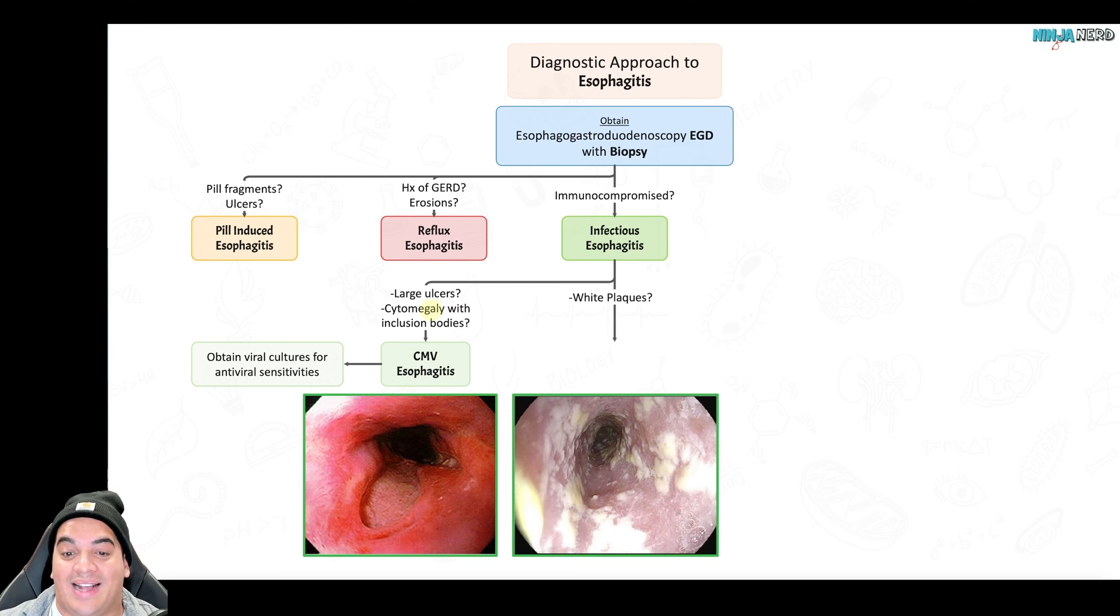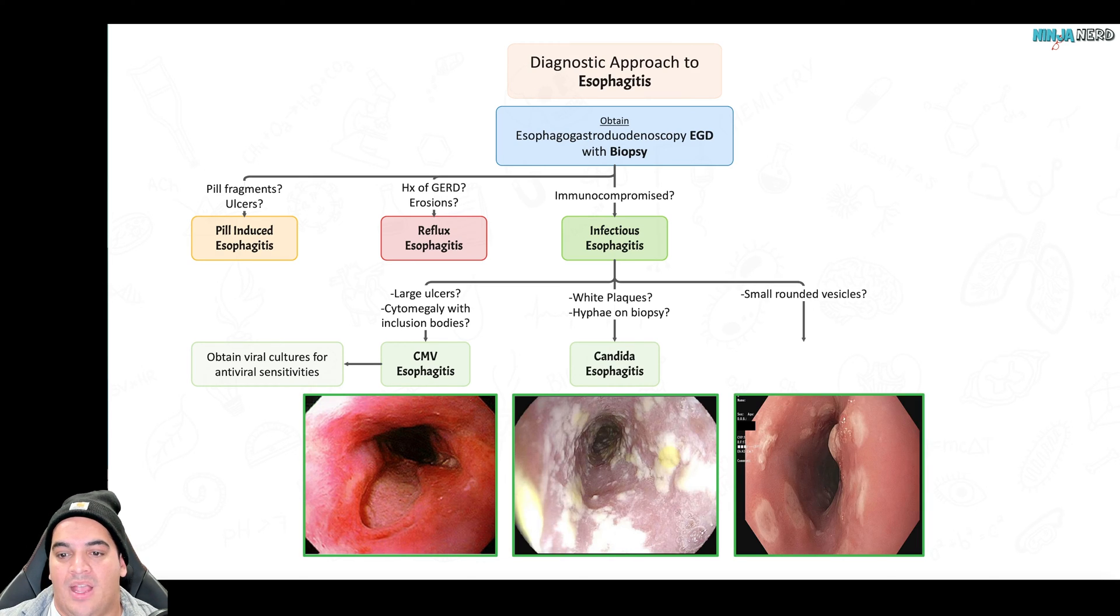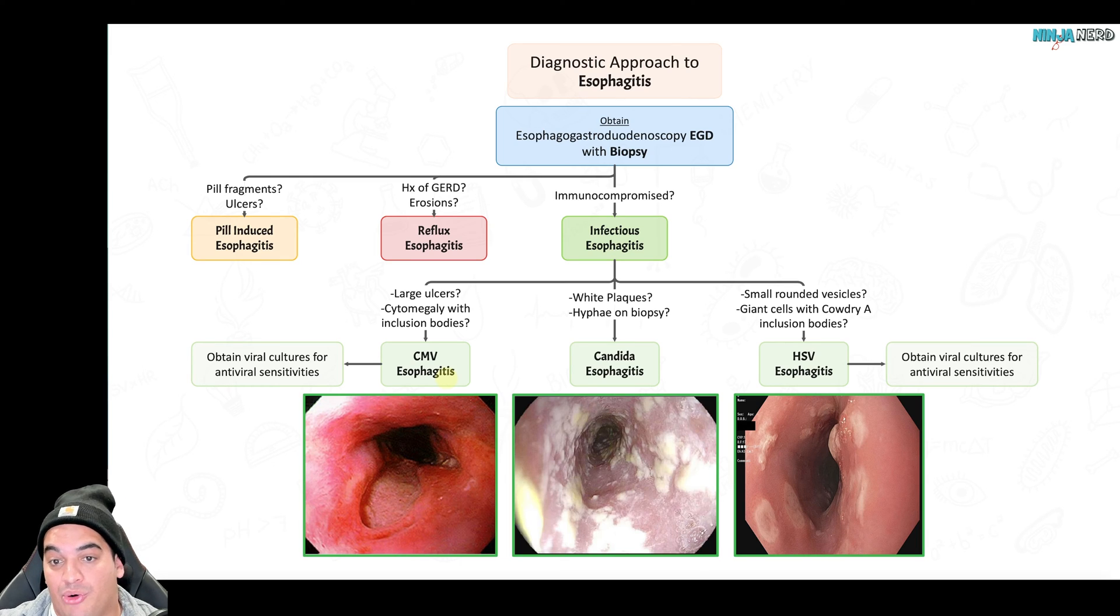The next thing is: do they have white plaques on top? When you biopsy it and see this cottage cheese look, and I biopsy and see hyphae, that's definitely Candida. If they have thrush, that helps with that diagnosis. The last one is if they have these small round herpetic vesicles, maybe even in the oral mucosa - definitely seems like herpes. Get the biopsy and look for giant cells with Cowdry A inclusion bodies. That really helps you say it's likely HSV. Same thing: HSV and CMV can have certain types of resistance, so send off viral cultures to make sure they're susceptible to their appropriate antivirals.